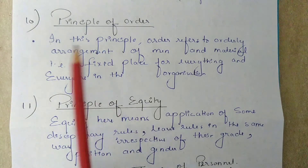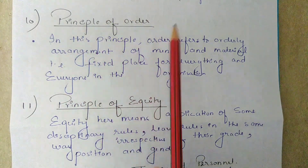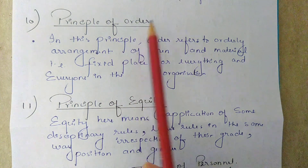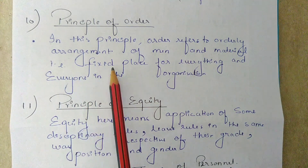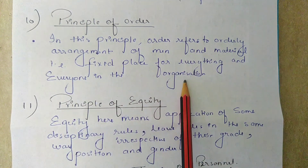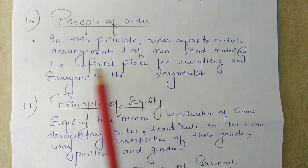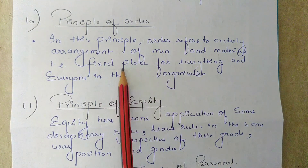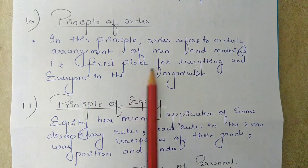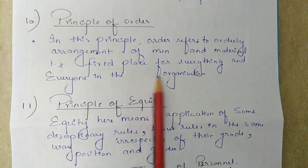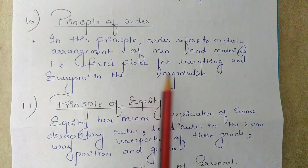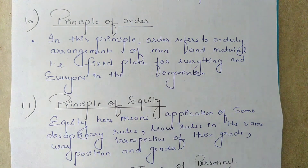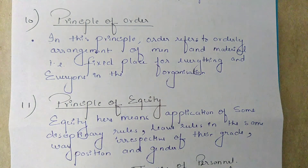The next principle is the principle of order. In this principle, order doesn't mean to command — it refers to the orderly arrangement of men and material, that is a fixed place for everything and everyone in the organization. This means keeping every material and things used in the organization in place, with a seat or cabin for every employee, so that no time and energy is wasted in searching for any material or item.